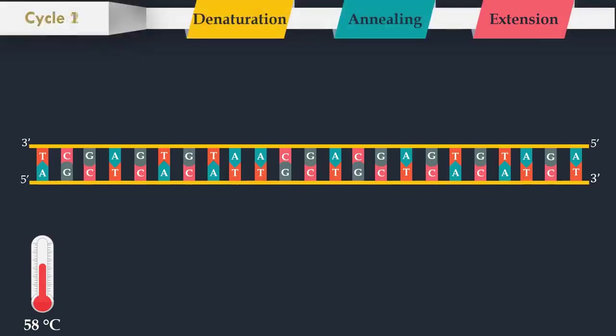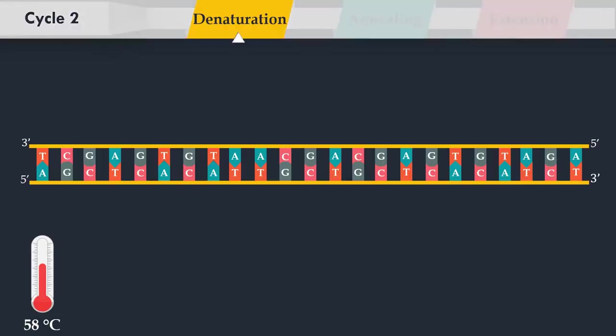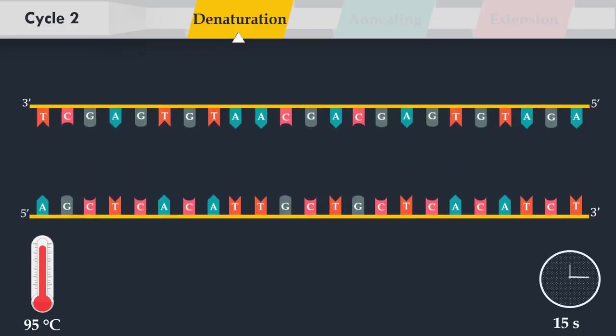After the first cycle, the double-stranded DNA target is obtained. Then, the denaturation of this double-stranded DNA is performed, yielding two single-stranded DNA molecules.